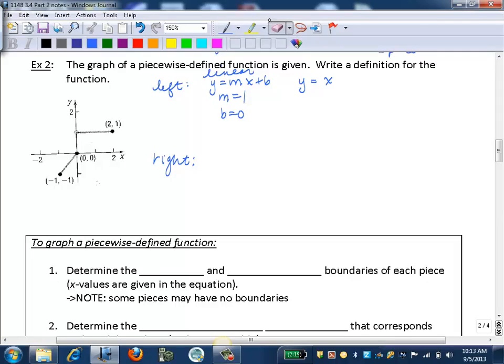Now we want the boundaries of this piece. This piece starts when the x value is at negative one, and then it ends when the x value is zero. So our domain of this piece, or the boundaries, are going to be negative one and zero. So the domain of this piece is bracket negative one, comma zero, bracket, because we're including those two boundaries.